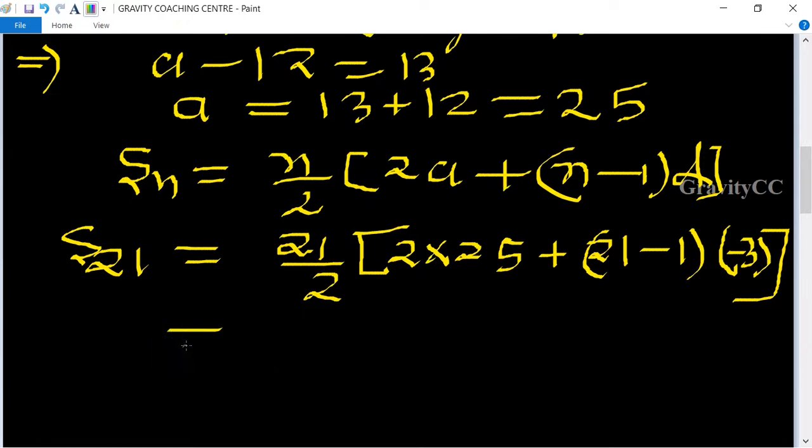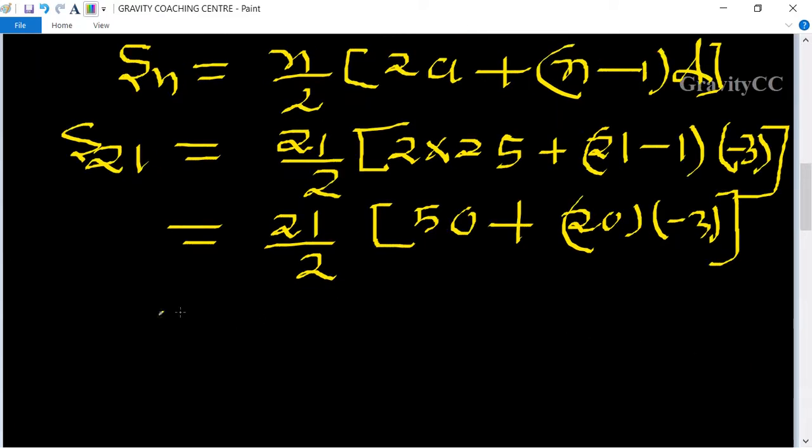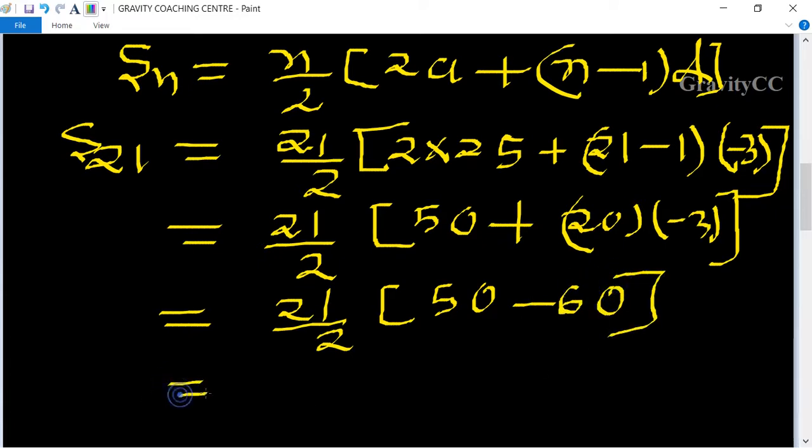S₂₁ = 21/2 × [50 + 20 × (-3)] = 21/2 × [50 - 60] = 21/2 × (-10).